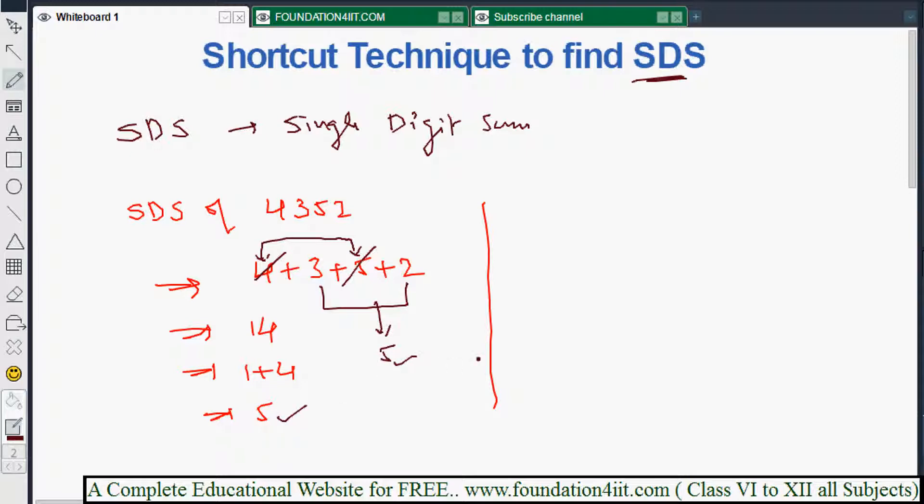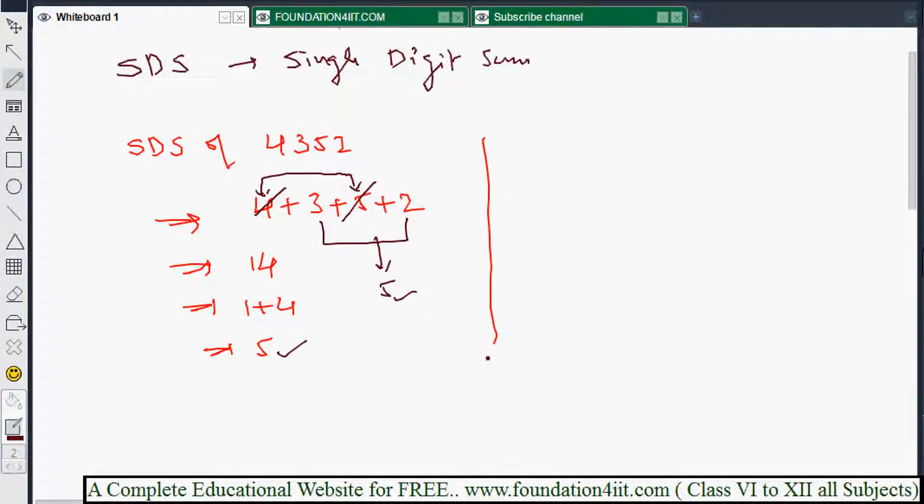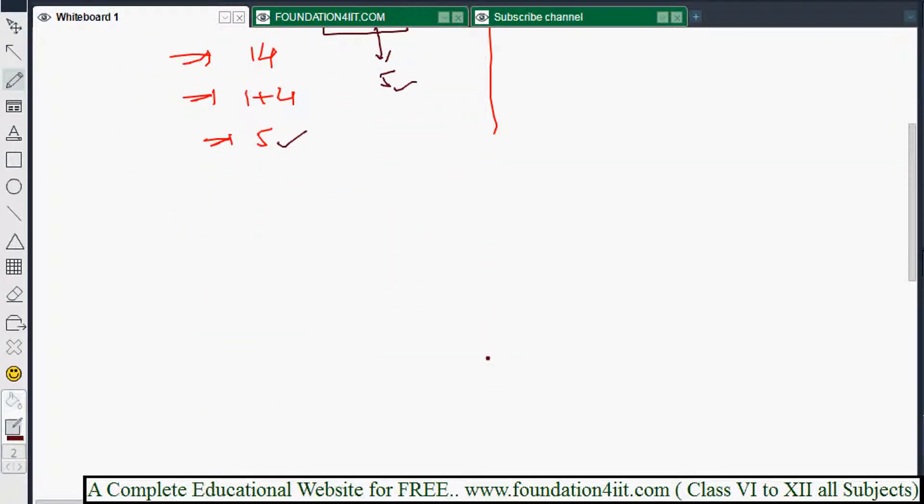I'll show you one more example. This is a shortcut to find SDS. For example, find the Single Digit Sum of 382645. I'm taking a big number: 3 lakh 82,645.